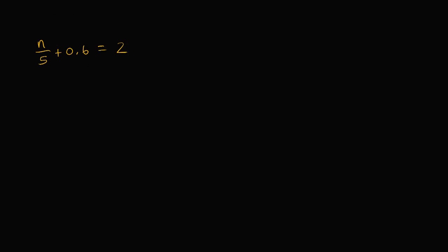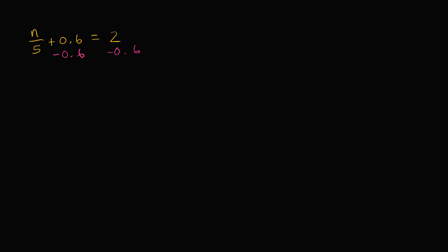Let's do another example. I have n/5 plus 0.6 is equal to 2. So let's isolate the term that involves n on the left hand side. Let's get rid of this 0.6 by subtracting 0.6 from the left hand side. But I can't just do it from the left — I have to do it from both sides if I want the equality to hold true. So subtracting 0.6, on the left I'm left with n/5, and on the right, 2 minus 0.6 is 1.4.